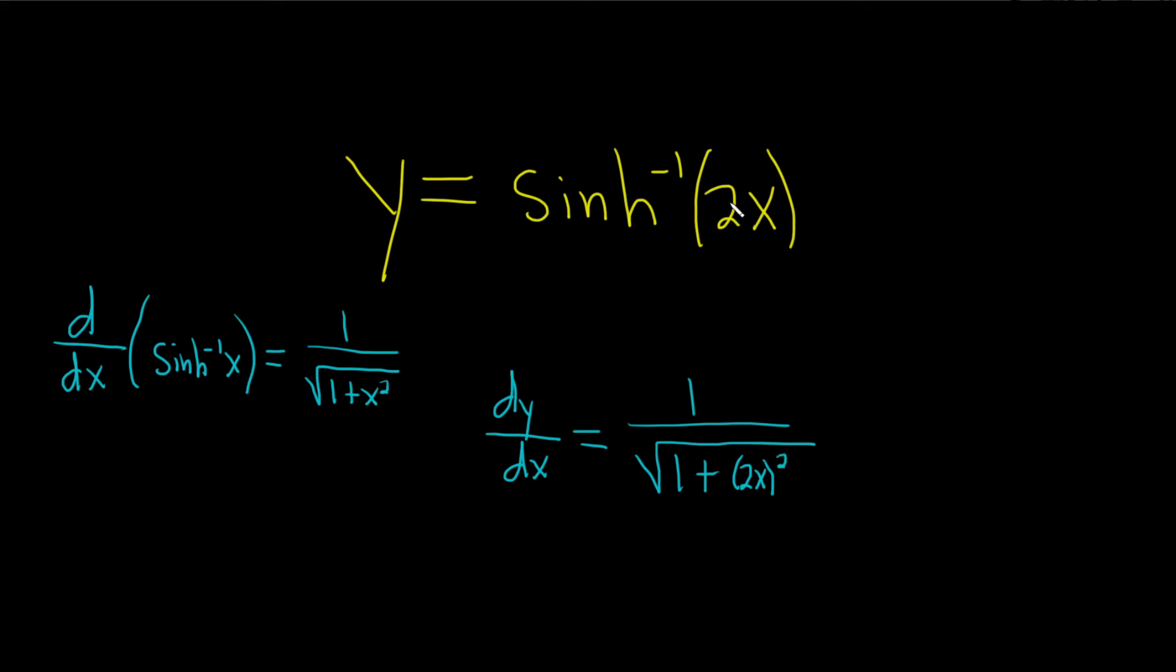So we took the derivative of the outside, we left the inside untouched, and now we have to multiply by the derivative of the inside, so times the derivative of 2x, which is just 2.